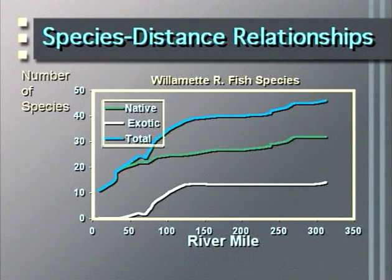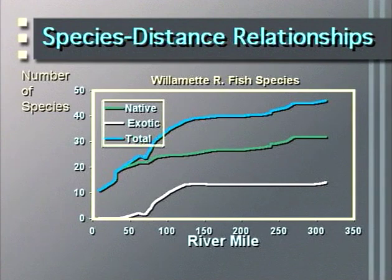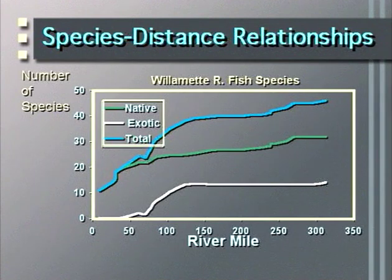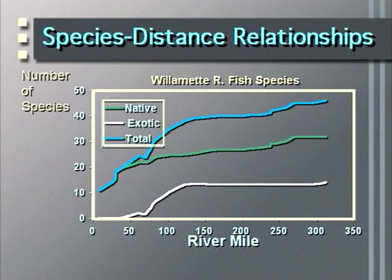As we reach the valley floor streams, we see an increase in warm-water introduced species — the exotic species — resulting in an even greater increase in the total number of species as we move from headwater streams to large river.